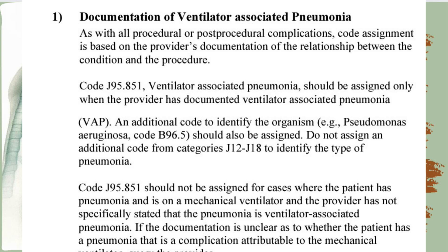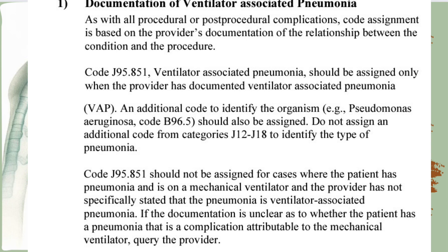Do not assign an additional code from categories J12 to J18 to identify the type of pneumonia when coding J95.851. Code J95.851 should not be assigned for cases where the patient has pneumonia and is on a mechanical ventilator but the provider has not specifically stated that the pneumonia is ventilator-associated. The documentation must support the relationship — if it is not documented, you should not code J95.851. If in doubt, always query the provider for clarification.